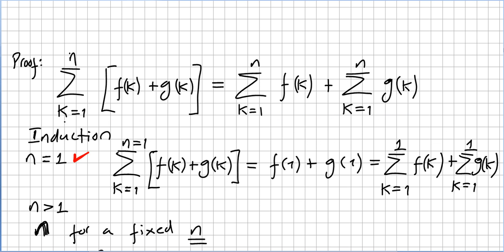So the sum from k equals 1 to n of f(k) plus g(k) equals the sum from k equals 1 to n of f(k) plus the sum from k equals 1 to n of g(k).